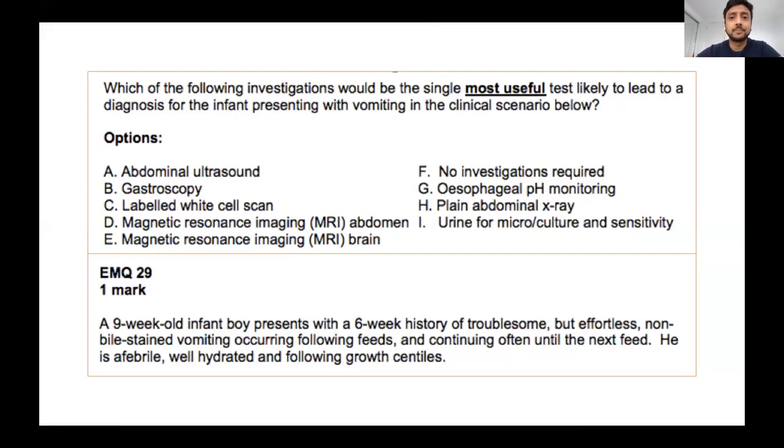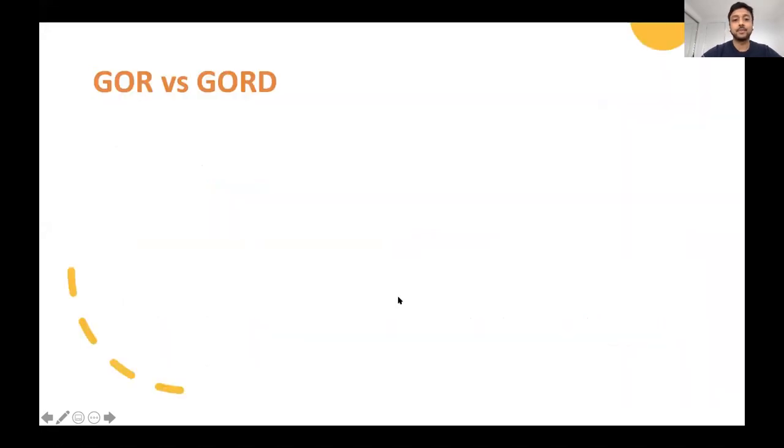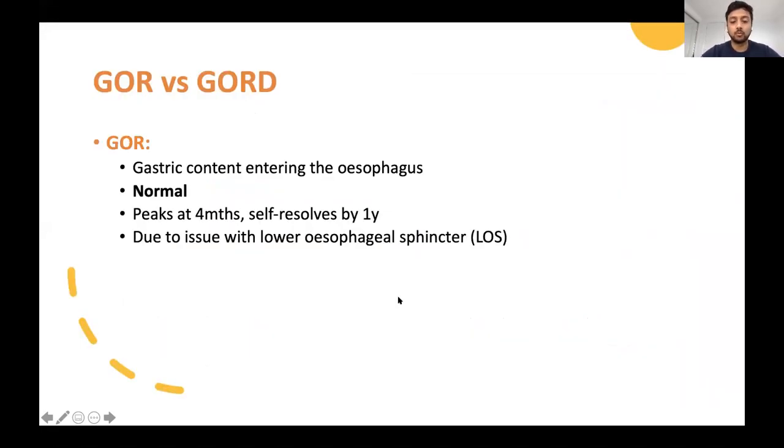In terms of gastro, the main things you need to know are GORD, gastroenteritis, and a bit on celiac disease. The others just know briefly, they're all part of your matrix. So we'll start with a question, you can type it in the chat. This is basically a typical stem that you'll get for GORD.